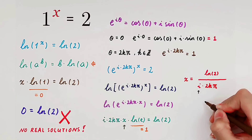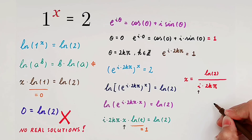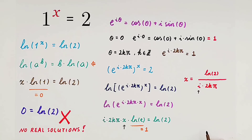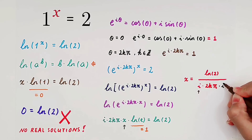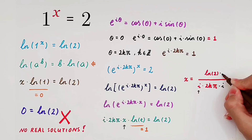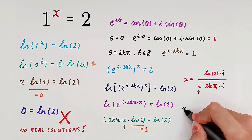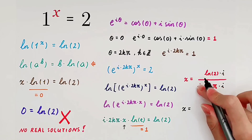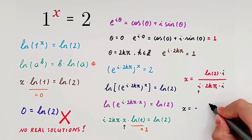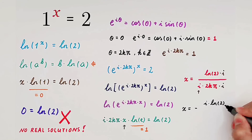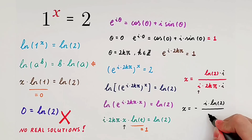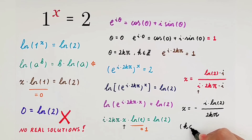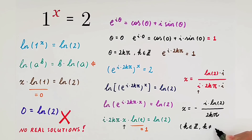We multiply the numerator and denominator by i. Since i times i equals negative 1, the result is negative. So x equals i times the natural log of 2, divided by 2kπ — or equivalently, x equals negative i·ln(2) divided by 2kπ. Note that k is a non-zero integer.